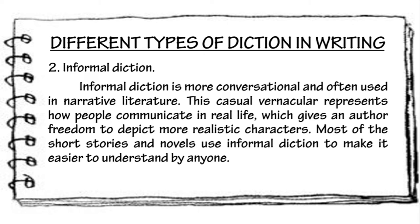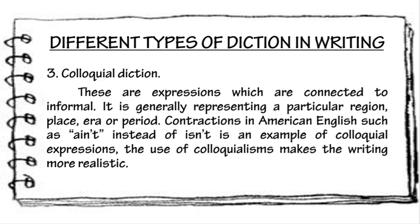The third type of diction is colloquial diction. These are expressions connected to informal language, generally representing a particular region, place, era, or period. Contractions in American English, such as 'ain't' instead of 'isn't,' are an example of colloquial expressions. The use of colloquialisms makes the writing more realistic. In other words, colloquial diction is the use of informal, local expressions, or slang.